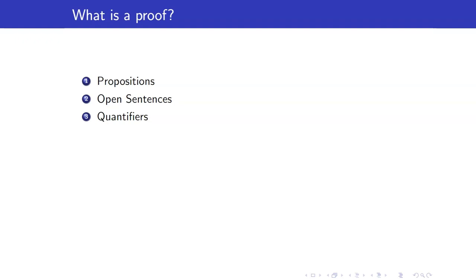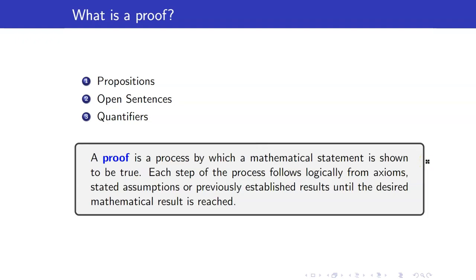What do we mean by a proof? A proof is a process by which a mathematical statement is shown to be true. Each step of the process follows logically from axioms, stated assumptions, or previously established results until the desired mathematical result is reached.